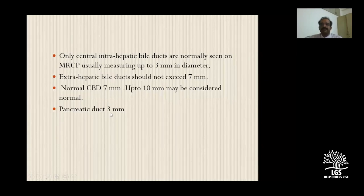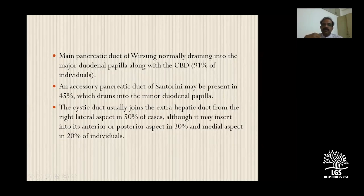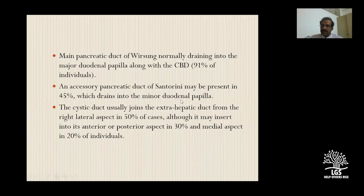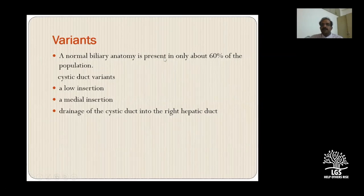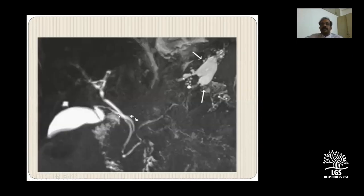Once we obtain the images, we look for any anatomical variants to include in the report - the surgeon will be very keen on this since he doesn't want to encounter unexpected anatomy. The main pancreatic duct most often drains into the major papilla along with the CBD, but sometimes there's an accessory duct of Santorini draining into the minor papilla. The cystic duct has numerous variations - it can join the extrahepatic duct in the right lateral aspect or insert in several other areas. Normal biliary anatomy is present in only about 60% of the population.